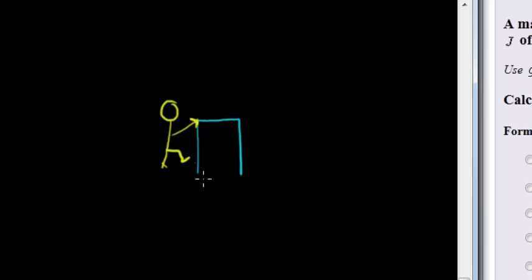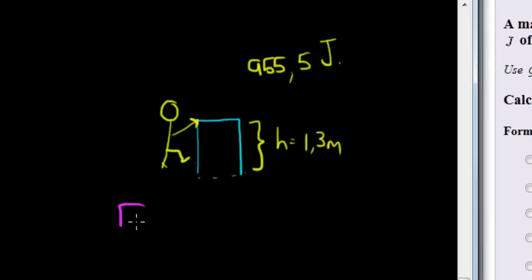A man climbing up on this wall and when the man gets to the top, he has 955.5 Joules of energy. We know the height of this wall as well. The height is given as 1.3 meters. Brilliant, and the rest is very easy.